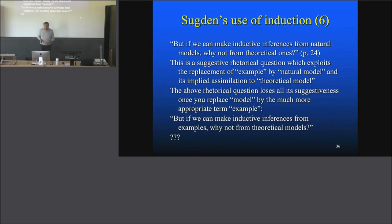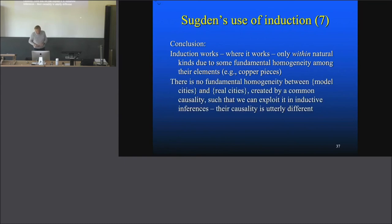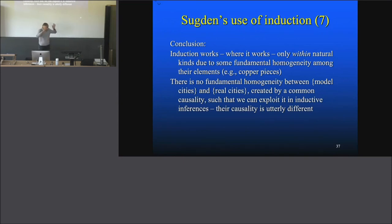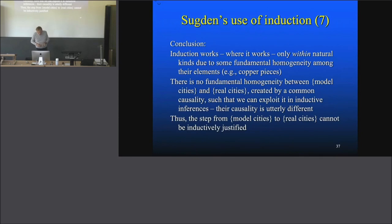The conclusion is: induction works where it works — only within natural kinds, due to some fundamental homogeneity among their elements, like copper pieces. Saxton gets this piece of induction right, he understands that. But there is no fundamental homogeneity between the set of model cities and real cities, created by a common causality, such that we can exploit it in inductive inferences. Their causality is utterly different — it's just not there. Theoretical models of cities are utterly different in their causality from the real cities, and therefore there can't be an inductive step between these two. So I think that Saxton's explanation or attempt here fails, and therefore we need an alternative approach.